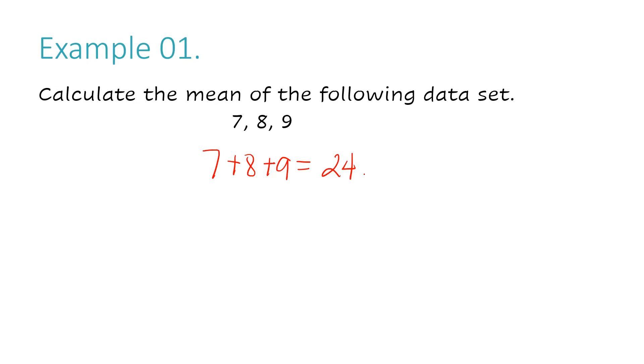If you remember when I explained how to calculate mean, I said you need to divide the sum of the numbers in your data set by the total amount of numbers in your data set. So the total amount of numbers in my data set is 3 because I have 1, 2, 3 numbers. So I'm going to take my 24 and I'm going to divide it by 3 and I'm going to get 8. So the mean of the data set 7, 8, and 9 is 8.